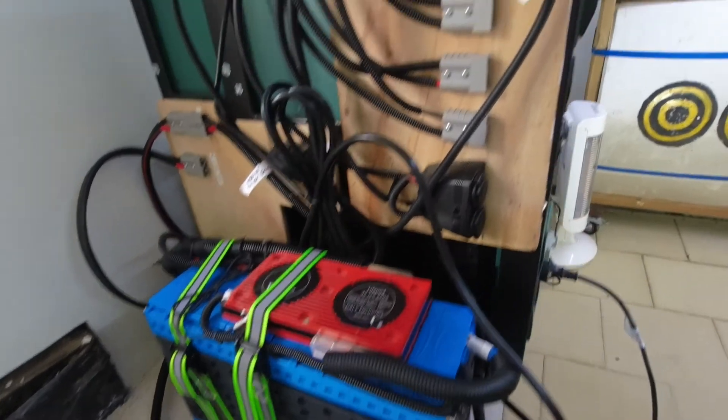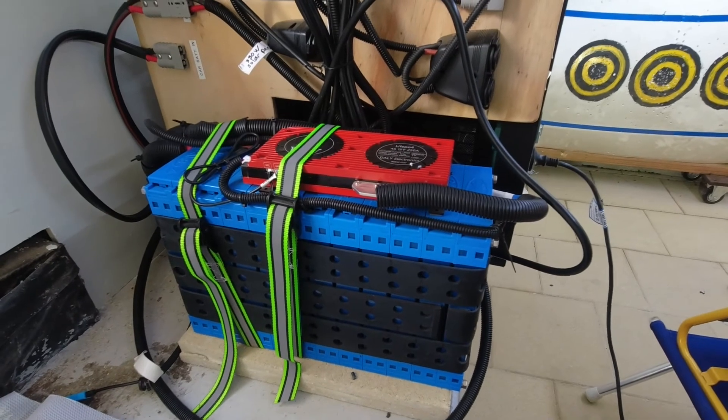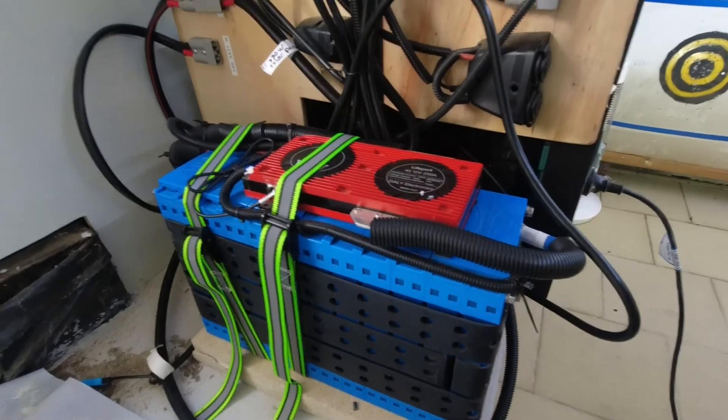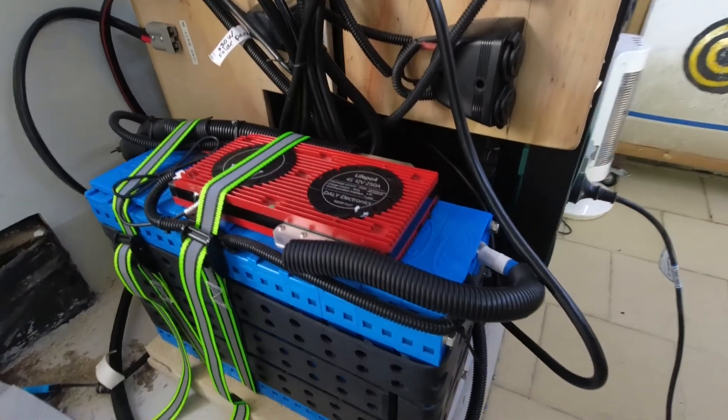And that's the CALB 12-volt 240 amp hour battery with a Daly 250 amp battery management system.